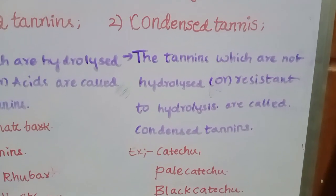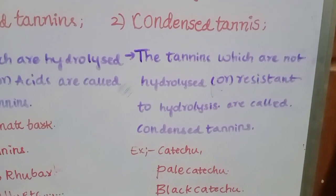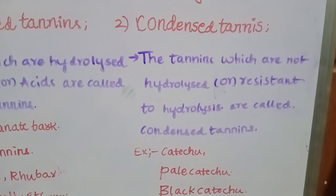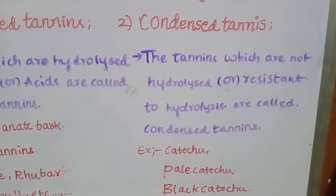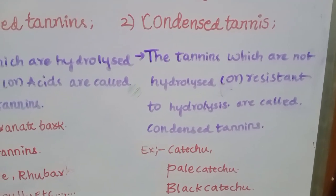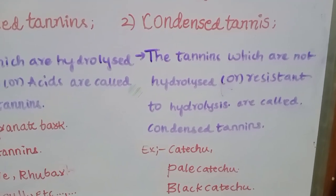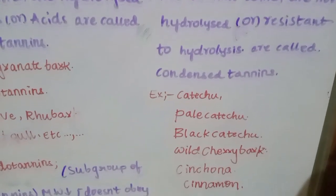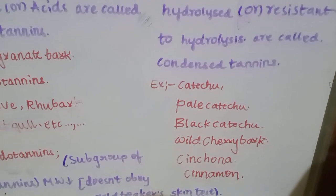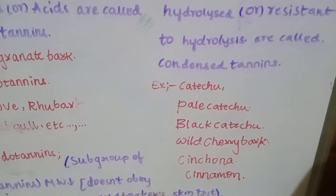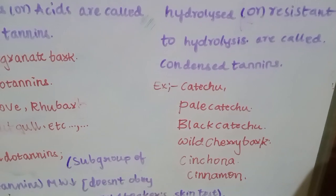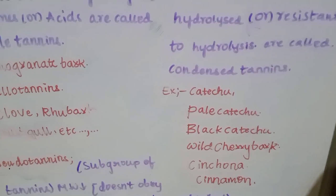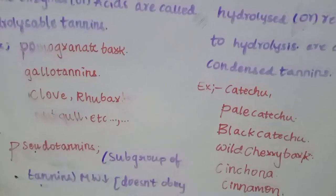Condensed tannins are opposite to hydrolyzable tannins — they are not hydrolyzable, meaning they are resistant to hydrolysis. Examples include pale catechu, black catechu, wild cherry bark, cinchona, and cinnamon.